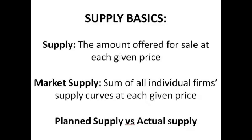Here are some really basic yet really important definitions. Supply is the amount offered for sale at each given price. Market supply is the sum of all of the individual firms' supply curves at each given price — the supply from every single firm. So if there are two firms, my firm makes 20 plants at £20 and your firm makes 30 plants at £20, total supply of plants at £20 is 50.